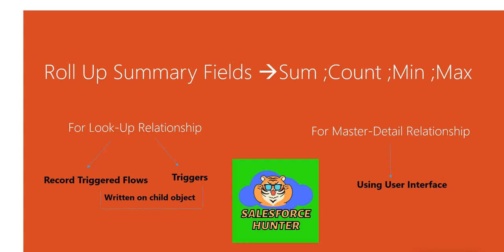Now you'll be like, how is it possible? As we know from the previous videos or we studied, rollup summary fields could be created only between objects having master-detail relationship. Yes, you are right, but that is only using the user interface. To create rollup summary fields between objects having lookup relationships, the ways we are going to discuss are using record triggered flows or triggers.